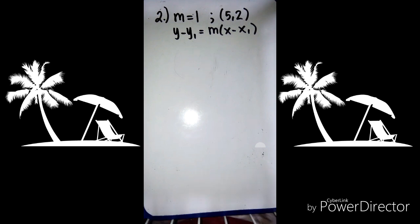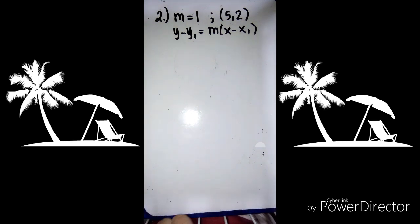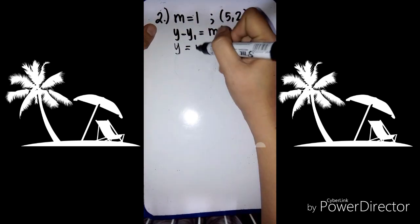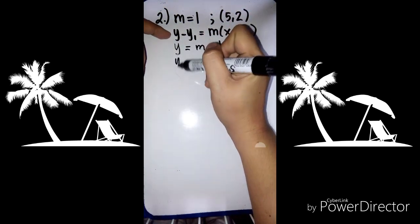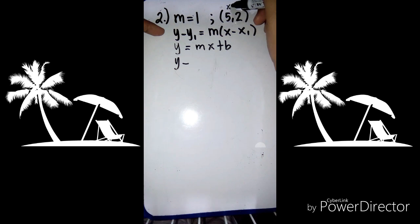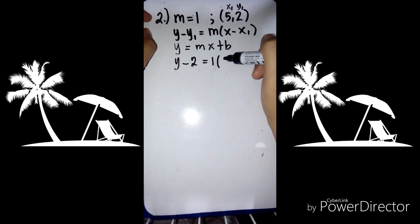For example 2, the given is m equals 1 and the point is (5, 2). Again, we use the point-slope form formula: y minus y sub 1 equals m times x minus x sub 1. We're going to find the equation in the form y equals mx plus b. So we write y minus y sub 1, which is 2, equals slope 1 times x minus x sub 1, which is 5.